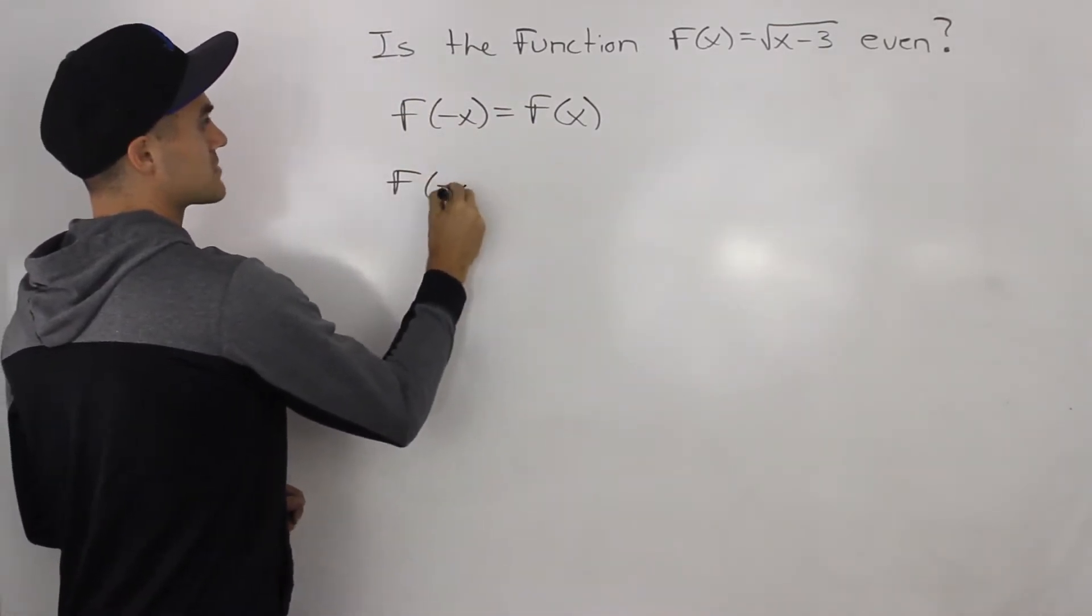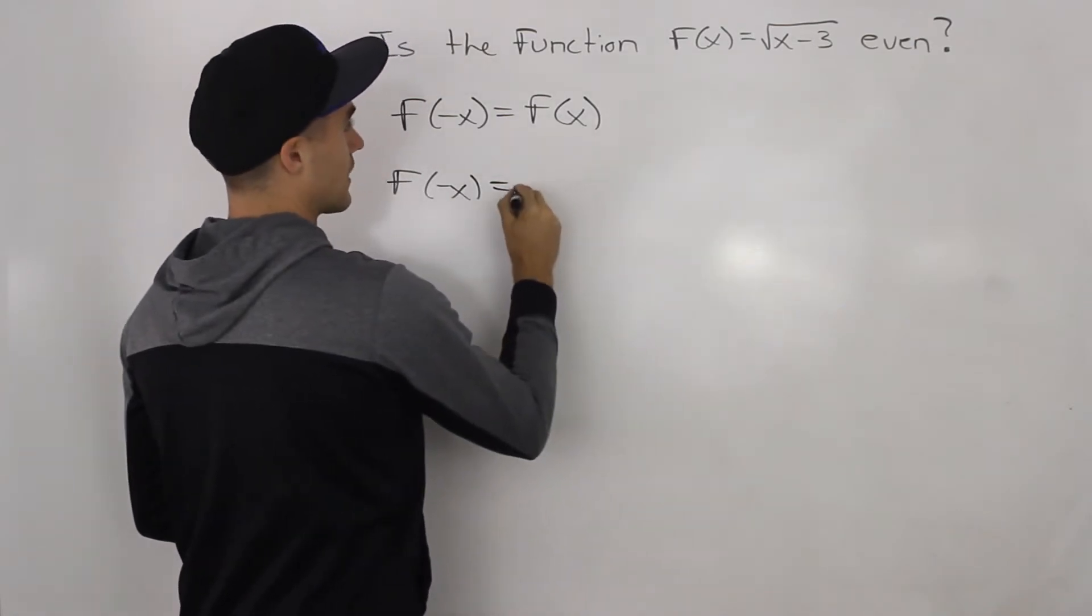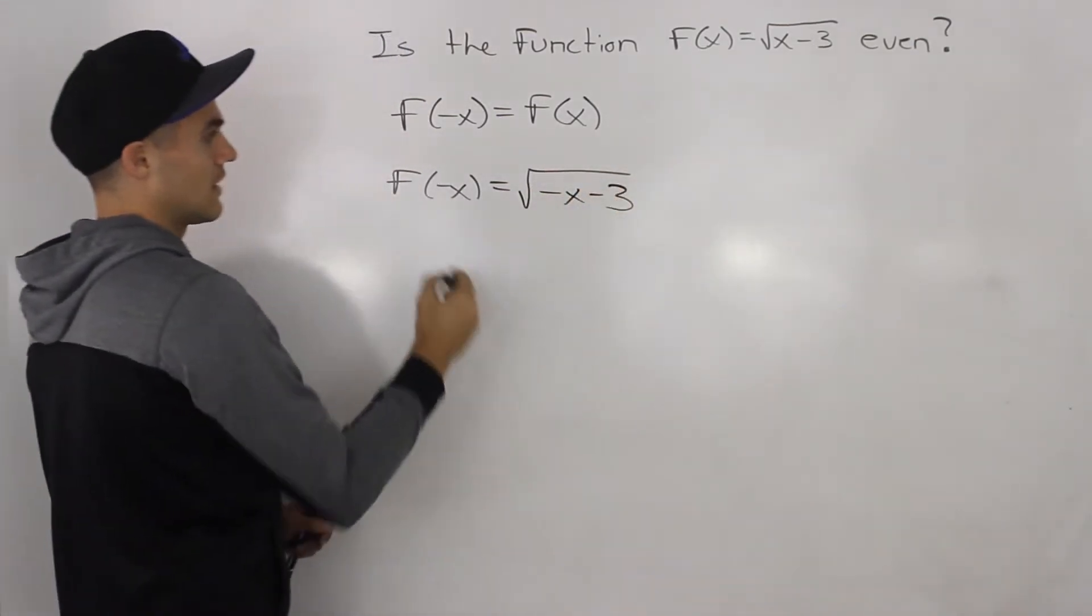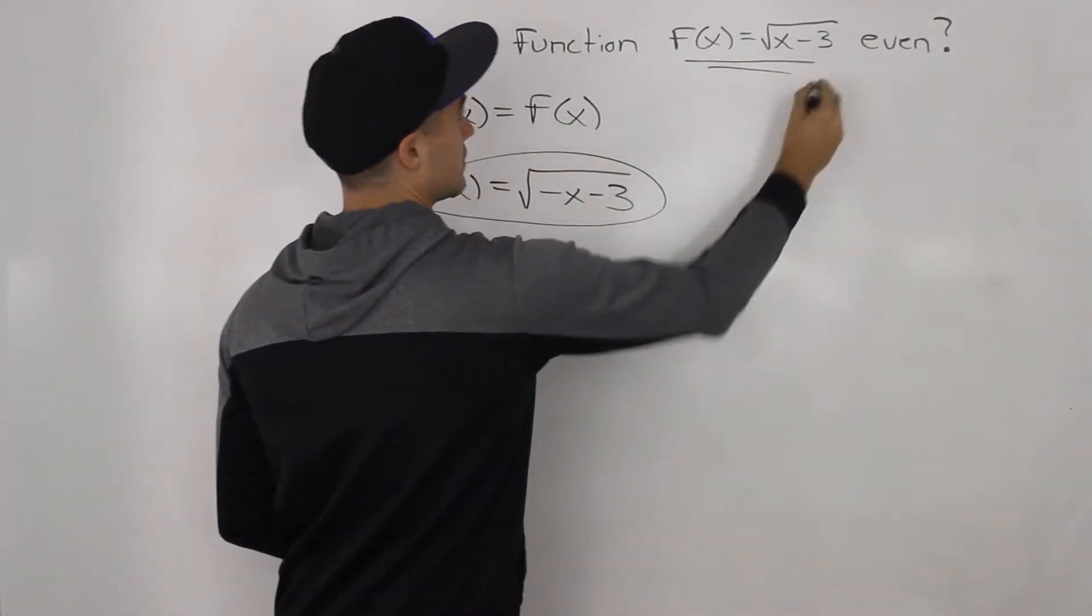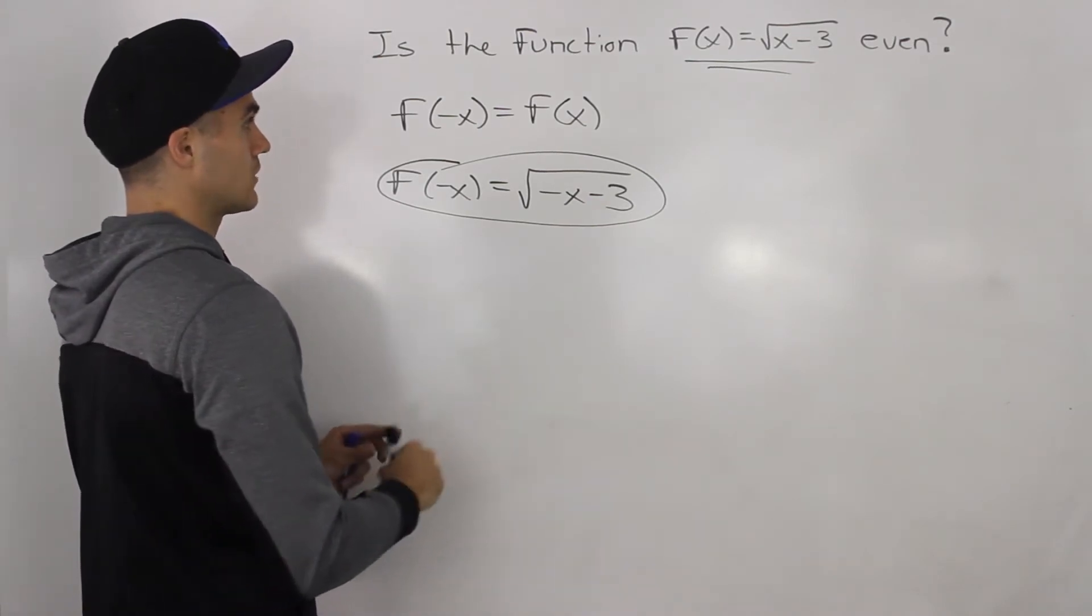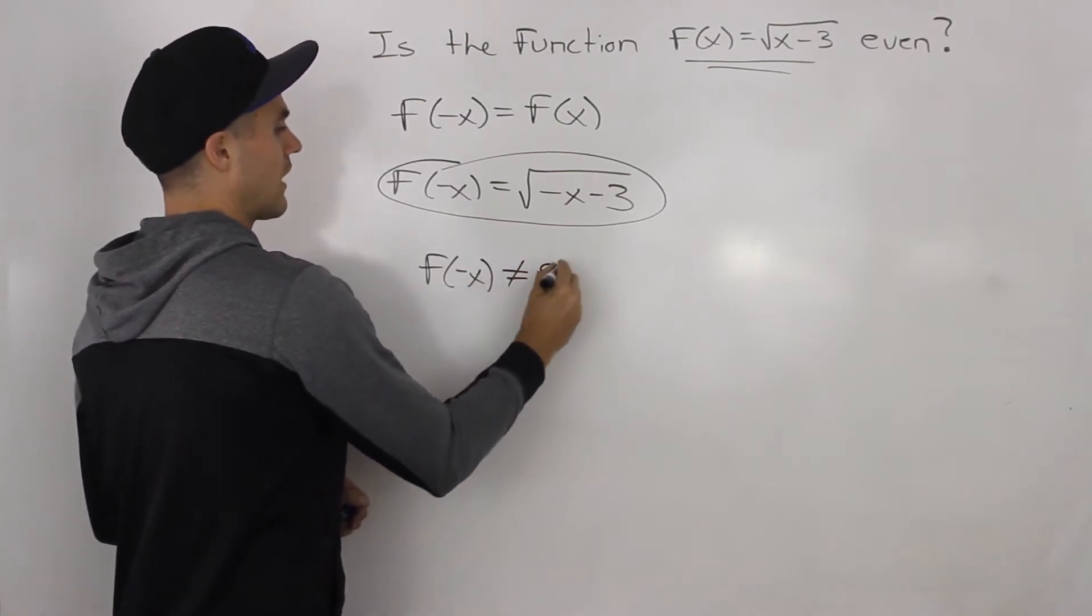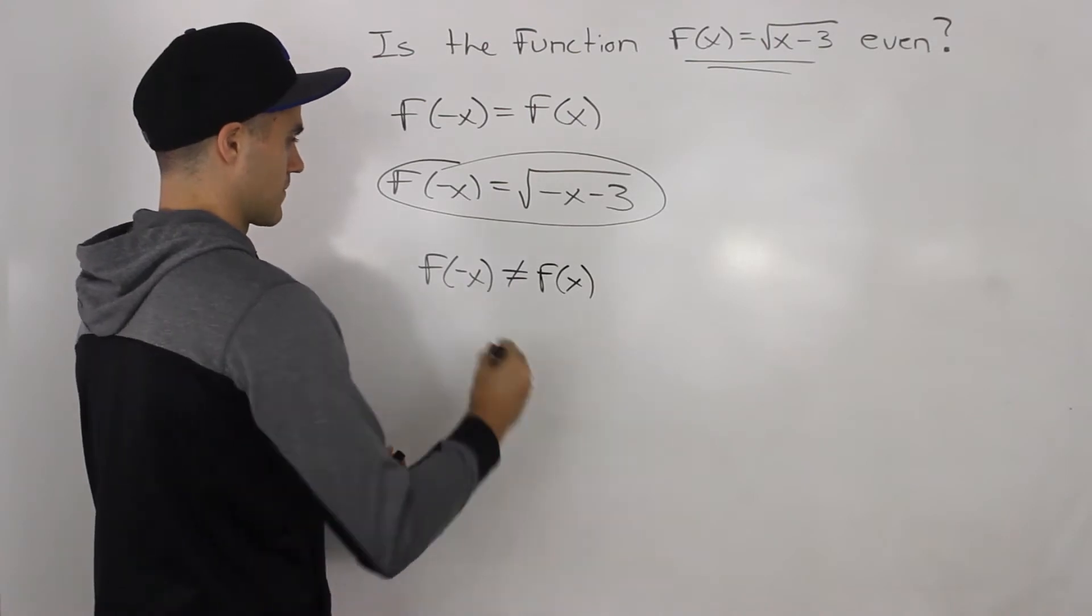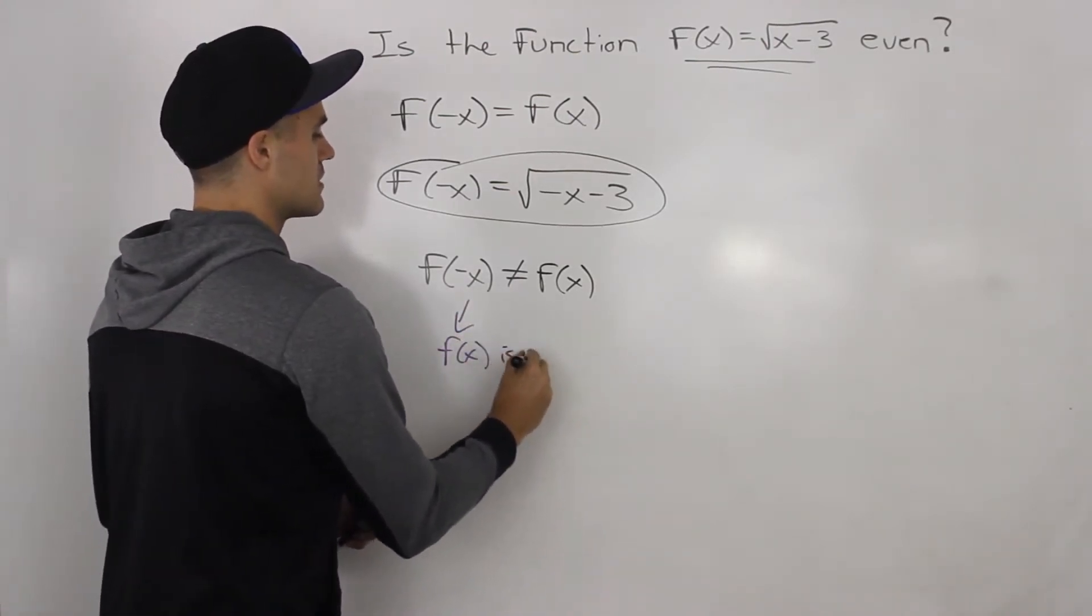Well, what would f of negative x be then? Well, we would just plug in negative x for the x. So that would be the square root of negative x minus 3. And notice how this and this here, they don't equal. So because they don't equal, since f of negative x does not equal f of x, the function is not even.